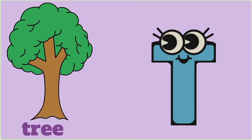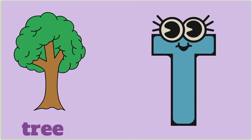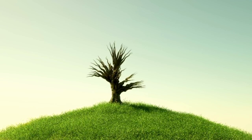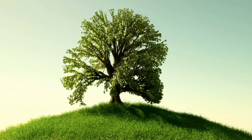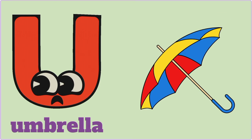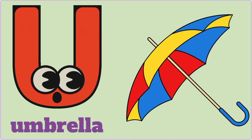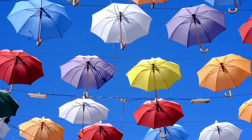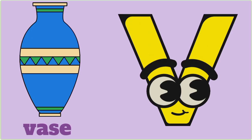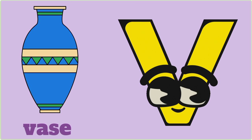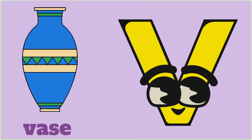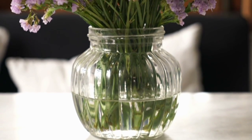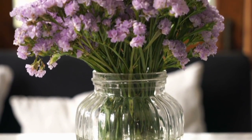T is for Tree. U is for Umbrella. V is for Vase.